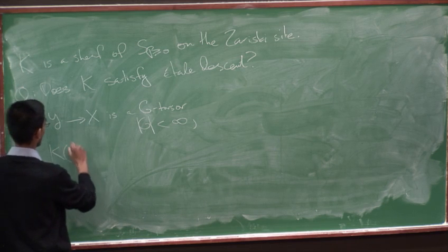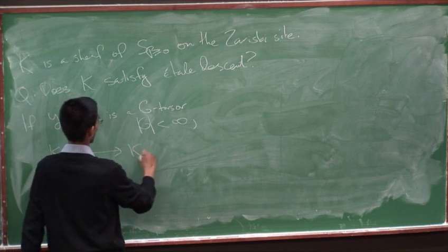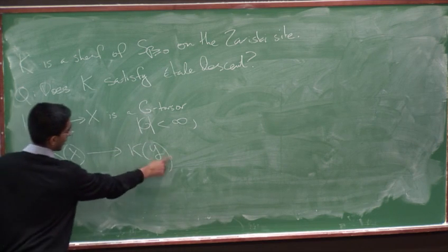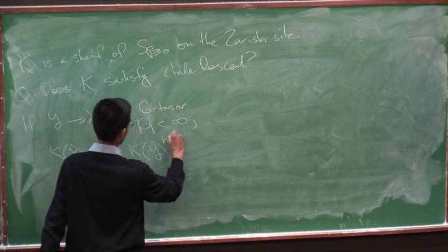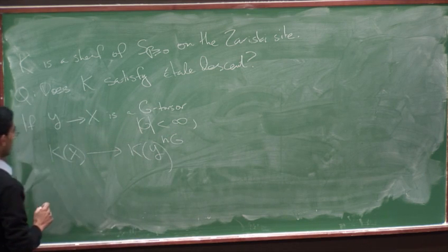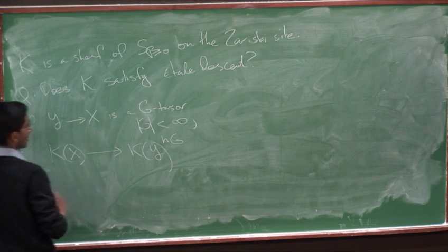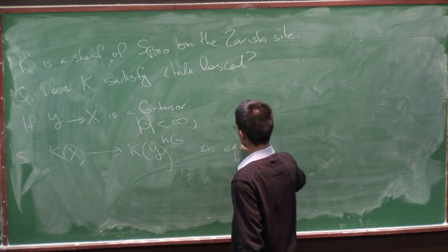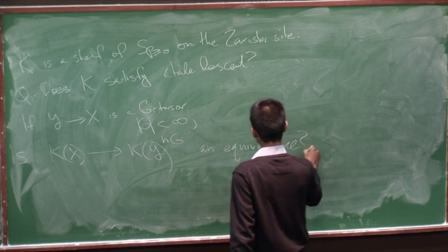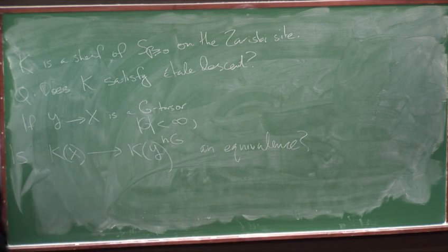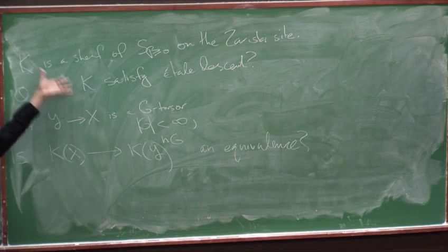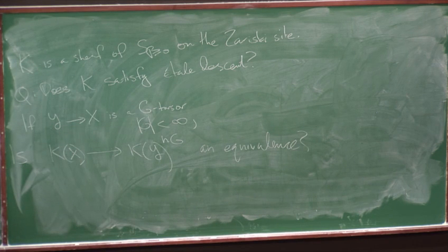Then we get a natural map from the K-theory of X to the K-theory of Y, which is a pullback, and the group G acts on K of Y. So this map is equivariant, so we get a natural map like this. So we get this map, and the question is, is this map an equivalence, or how close is it to being an equivalence? So this is the basic Galois descent question in algebraic K-theory. And if we had something like this, then we could hope for some sort of local to global spectral sequence starting from étale cohomology and converging to algebraic K-theory.